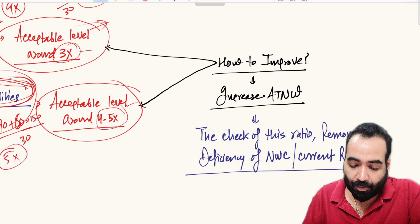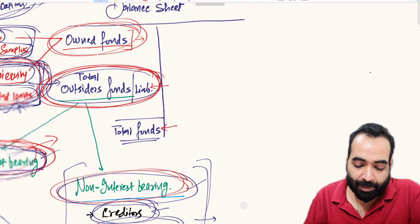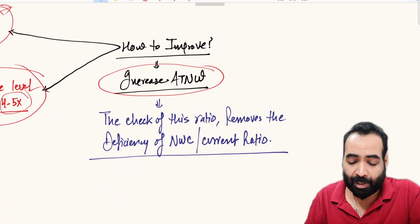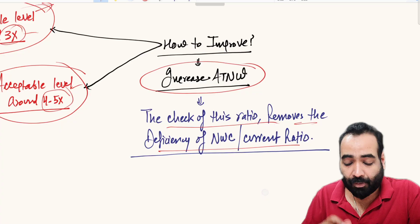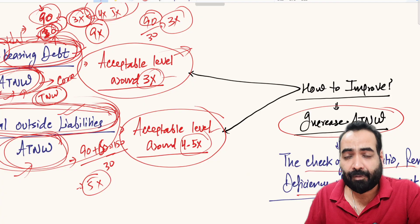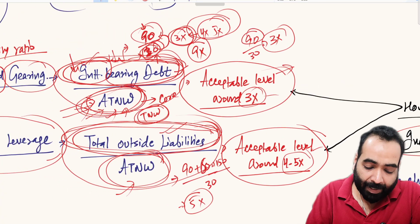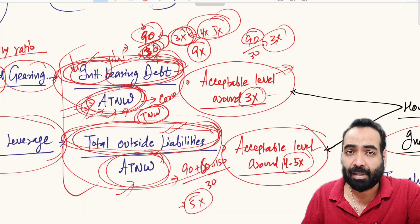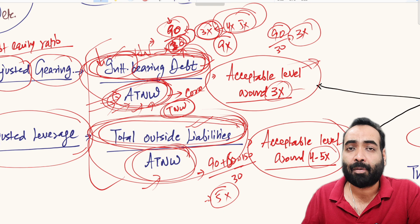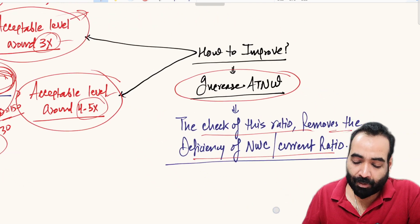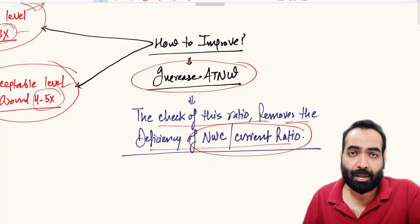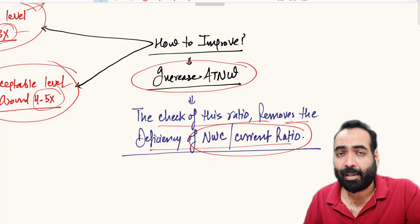The only solution to improve both ratios is to increase the denominator — increase ATNW, infuse more capital into the business, or bring in more quasi equity. If these ratios worsen, banks will not provide funding support. These ratios practically measure the promoter margin in the business, so any improvement is fully dependent on improvement of ATNW. This is how gearing and leverage ratios remove the deficiency seen in NWC and current ratio calculations.